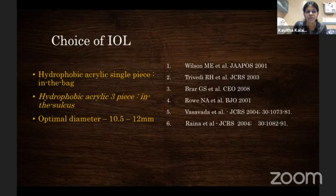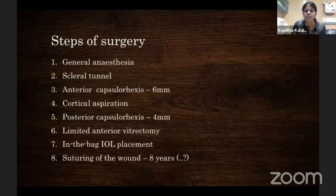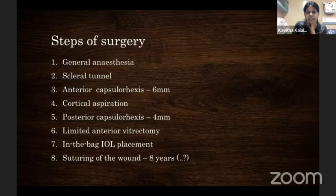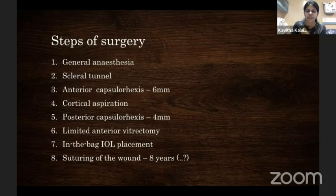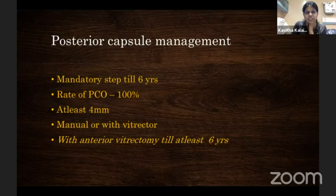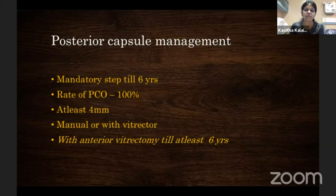The preferred IOL is an in-the-bag acrylic hydrophobic single-piece IOL; in the sulcus, use a three-piece IOL. Ideal optical diameter is 10.5 to 12 mm. A good anterior capsulorhexis is the most important step in pediatric cataract surgery — even if the posterior capsule has a dehiscence or we lose the rhexis, the sulcus remains intact. For children younger than eight, do a posterior capsulorhexis of at least 4 mm in diameter. Posterior capsule management is extremely crucial till six years of age, since the rate of PCO approaches 100%; at least a 4 mm opening should be made using manual rhexis forceps or a vitrectomy cutter.